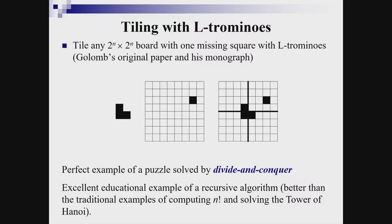An excellent example is tiling with L-trominoes: a 2^n by 2^n board with one missing square, tiled with L-trominoes. It's not only a perfect example of a puzzle solved by divide and conquer, it's also an excellent educational example of a recursive algorithm — better than the traditional examples of computing n factorial or solving the Tower of Hanoi.